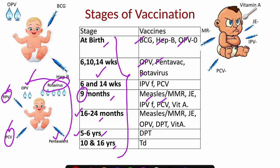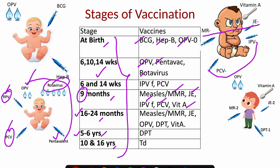At 9 months, the vaccines include 2 subcutaneous vaccines — measles or MMR. MMR stands for mumps, measles, and rubella. The other subcutaneous vaccine is JE, which is given only in endemic districts of India. Along with that, we also start giving Vitamin A orally.